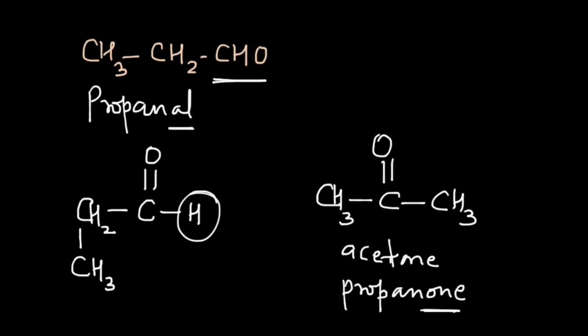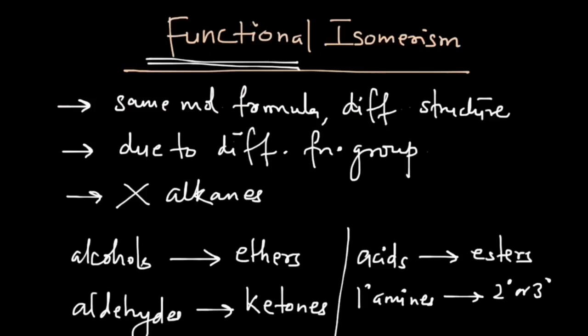So all you have to do is remember a few things: alcohols are functional isomers of ethers, aldehydes are functional isomers of ketones, acids are functional isomers of esters, and amines are functional isomers of other amines with different degrees. In the next video we are going to talk about metamerism. So stay tuned. Bye.